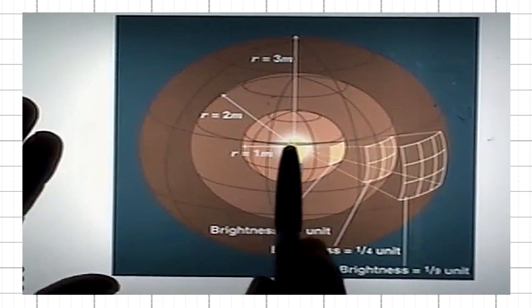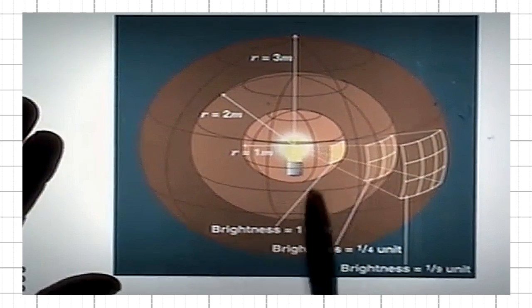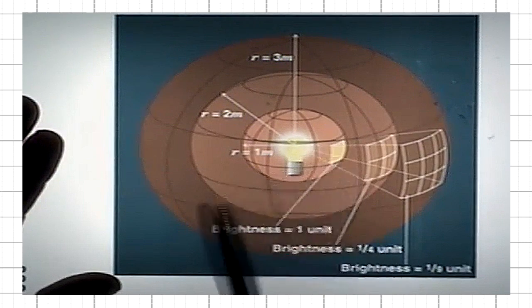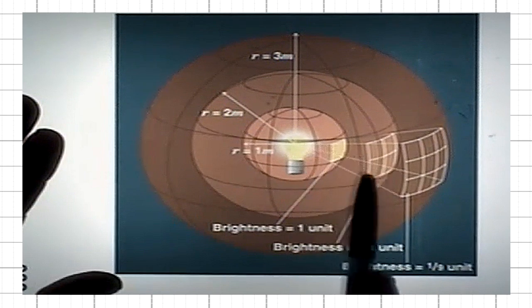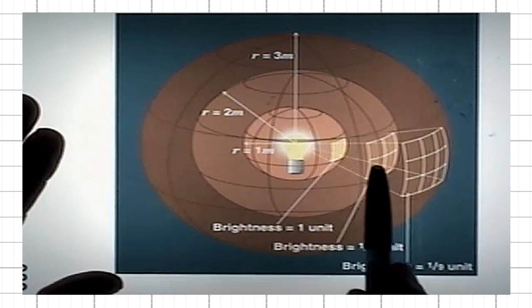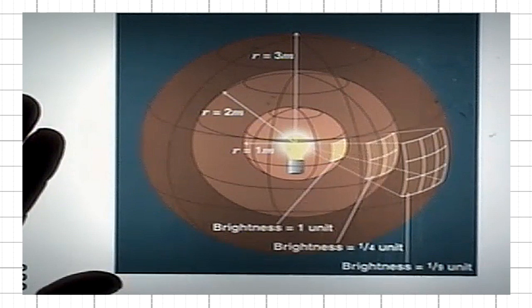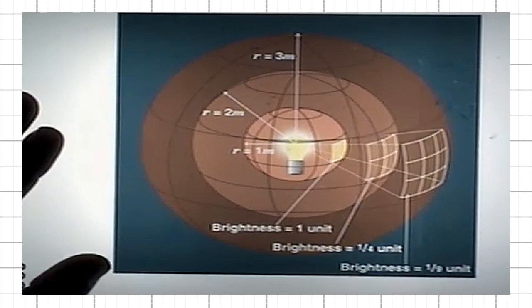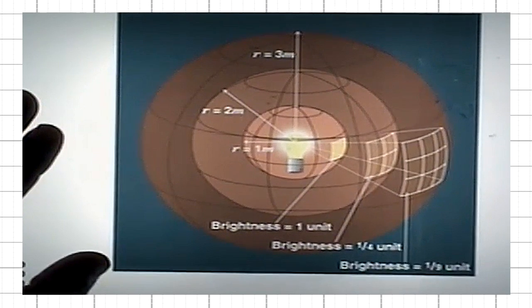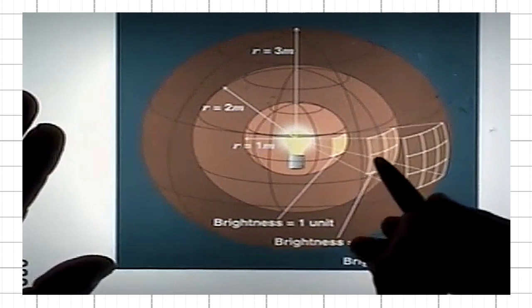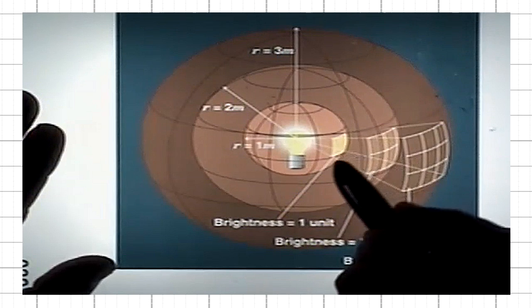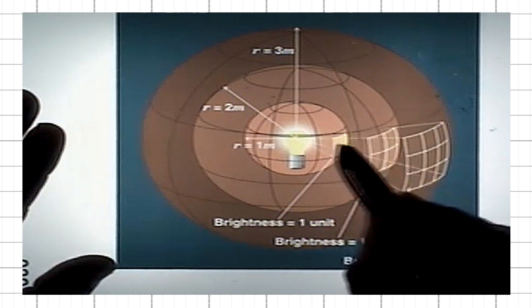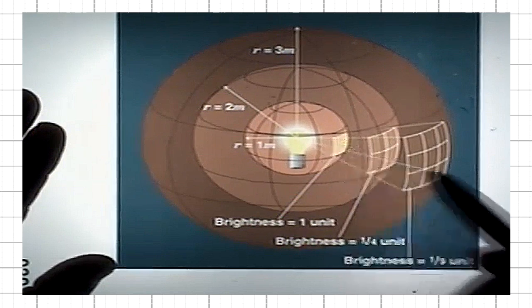At a distance of two meters, the same amount of energy that passed through the unit area at a distance of one meter, now at two meters, that same amount of energy is passing through four unit areas. Then, the amount of energy that each unit area receives is reduced by a factor of four. It's only one quarter of the energy that passed here.